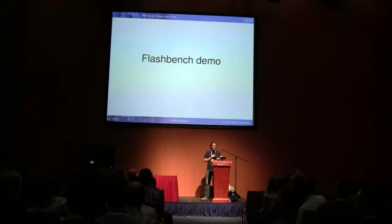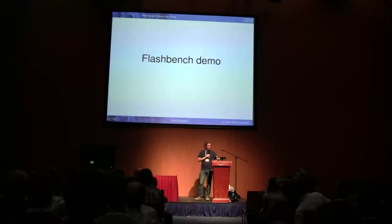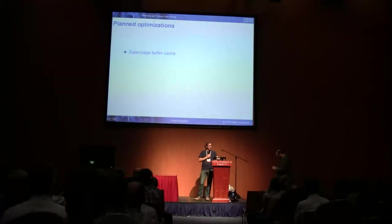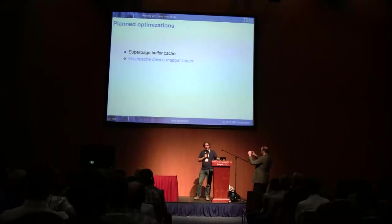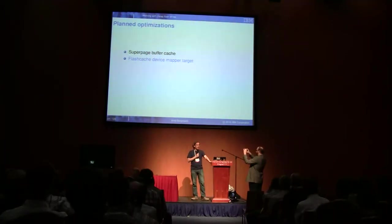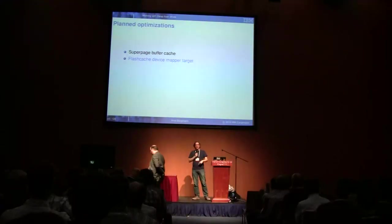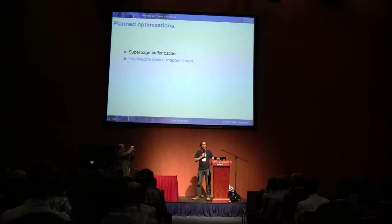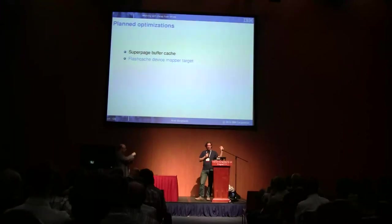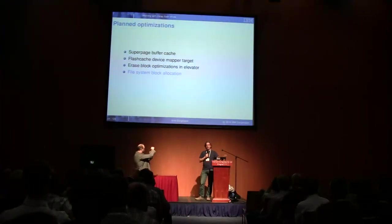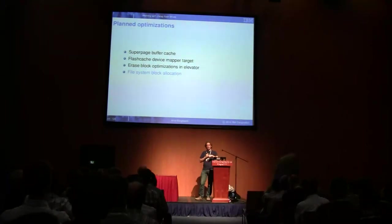We don't have time for a demo now, but if you want to see how I got to the data, come to me later and you can measure your own cards and I'll show you how I found all this out. Planned optimizations include modifying the buffer cache to handle more than 4-kilobyte pages, using flash drives as a cache for a real hard drive, and using the same method to optimize flash storage in normal block devices. The elevator also has things to optimize, and we're heading toward getting these optimizations into Btrfs, ext4, and others.